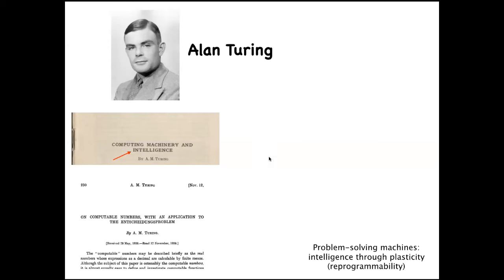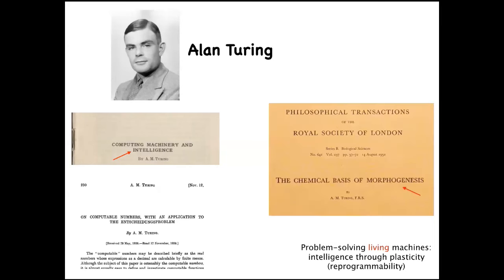Alan Turing — forefather of ideas in artificial intelligence — thought about computation, minds embodied in different media, reprogrammability, and problem-solving machines. He also published 'The Chemical Basis of Morphogenesis,' an early attempt to understand how embryos self-organize and why order arises in embryogenesis. I think he saw a profound symmetry between the problem of the origin of the mind and the origin of the body.